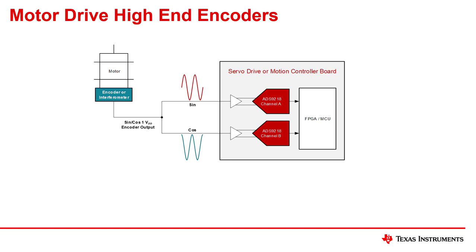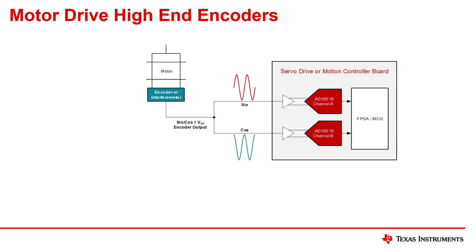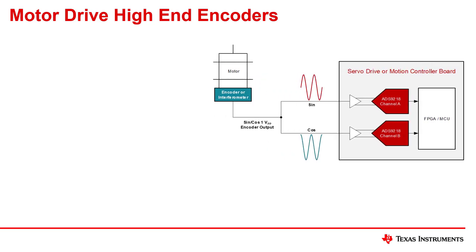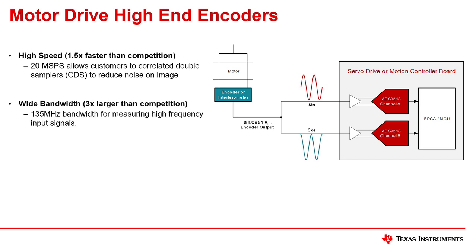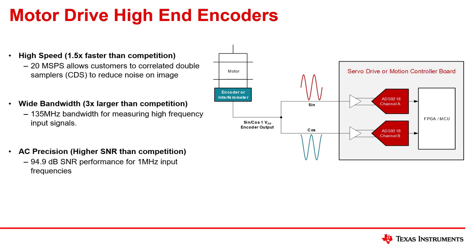Encoders output an analog sine-cosine signal that represents the position of the motor. The ADS9219 family is optimal for measuring these signals due to its two simultaneous sampling ADC cores — one core to measure the sine output, the other to measure the cosine output. The ADS9219 family also includes a wide bandwidth integrated driver, which allows for a broader range of front ends.